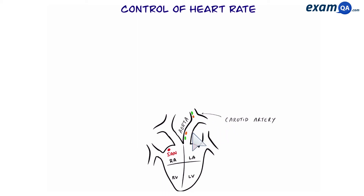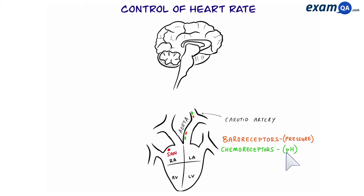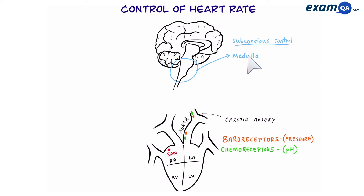These receptors are baroreceptors, which measure blood pressure, and chemoreceptors, that measure blood pH. Here we have a picture of the brain. This area is known as the medulla oblongata — for now we'll just call it the medulla. The medulla is responsible for subconscious control of different parts of the body, for example the heart, but also breathing.